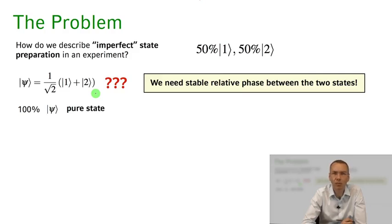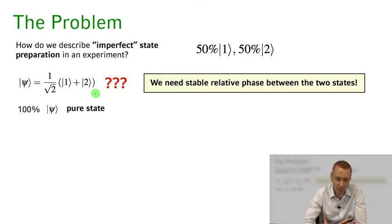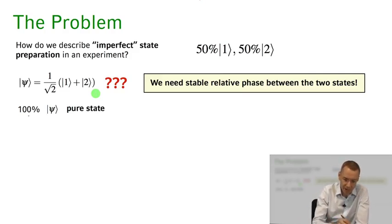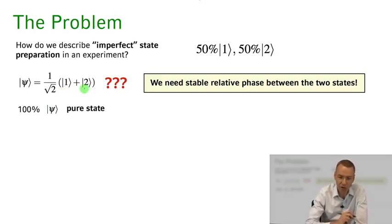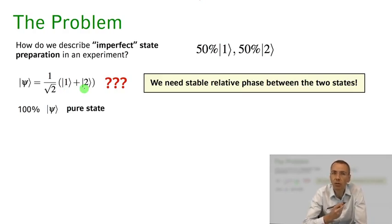I really want to describe a situation where as an experimentalist I'm creating imperfect conditions in my state preparation. Here we would have a source with 100% probability emitting particles in this pure state psi, and in order to have that we need to control the phase between states one and two. Very often this is not possible, or not as well controlled in the experiment as we would like.